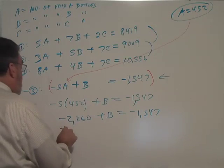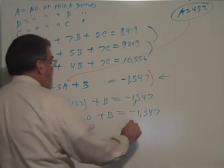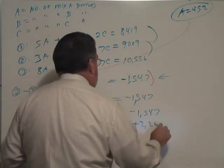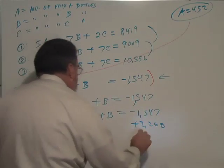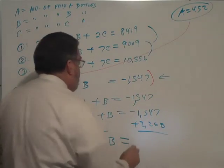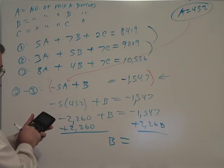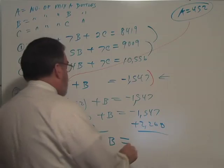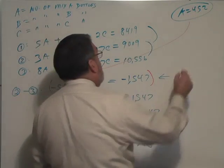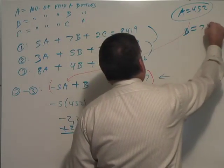Now I'm going to add 2,260 to both sides and we'll have solved for B. So this would be 2,260 minus 1,547 is 713. So B is 713.